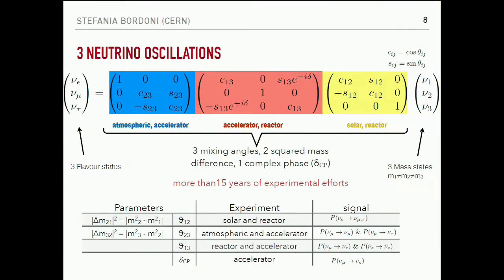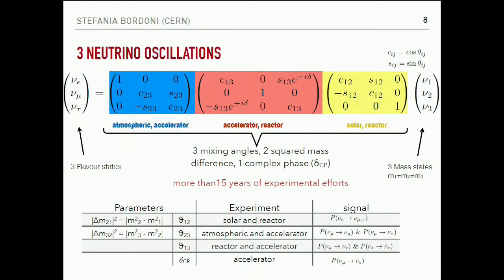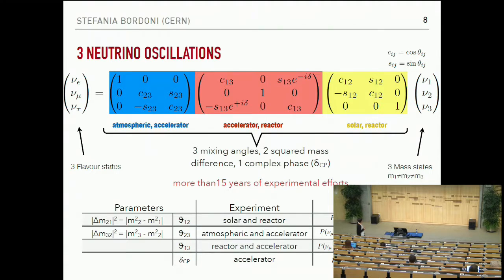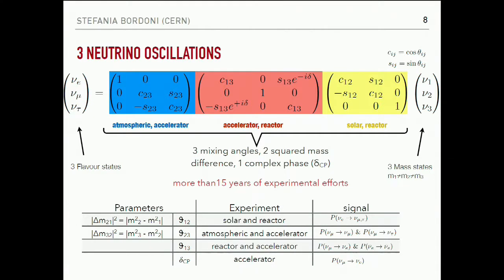Looking at the PMNS matrix that was already seen in previous lectures, we have the three flavor states and the three mass eigenstates, with the parameterization of the matrix into three different blocks. I have highlighted which experiments or types of experiments can access those parameters. We have two mass splittings, three mixing angles, and the delta CP phase — and here are the types of experiments that can perform those measurements and the kind of signal you look at.